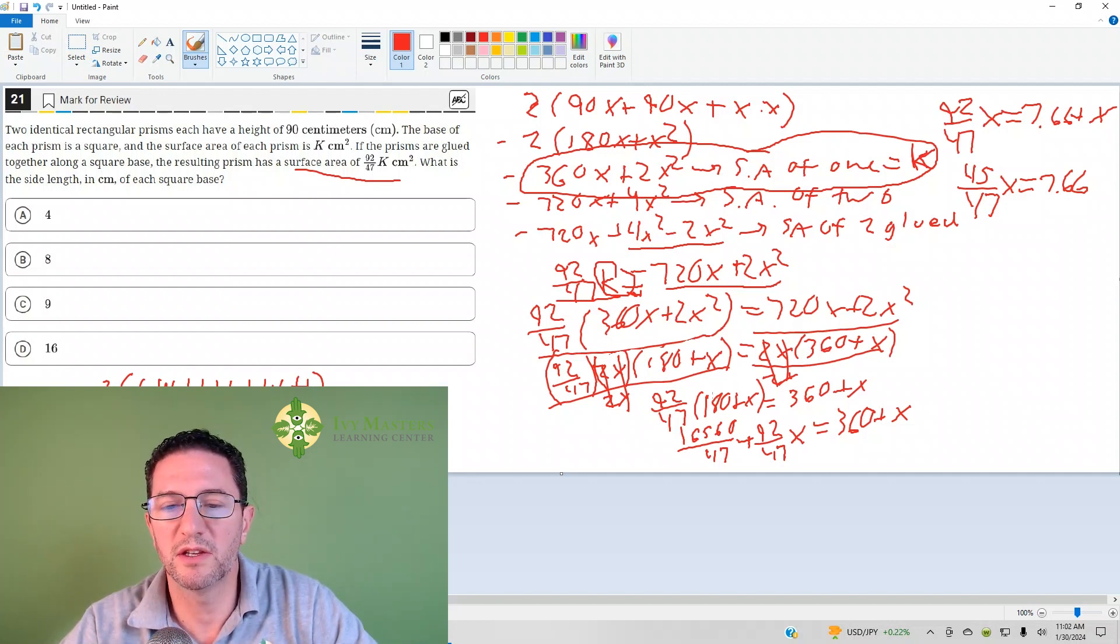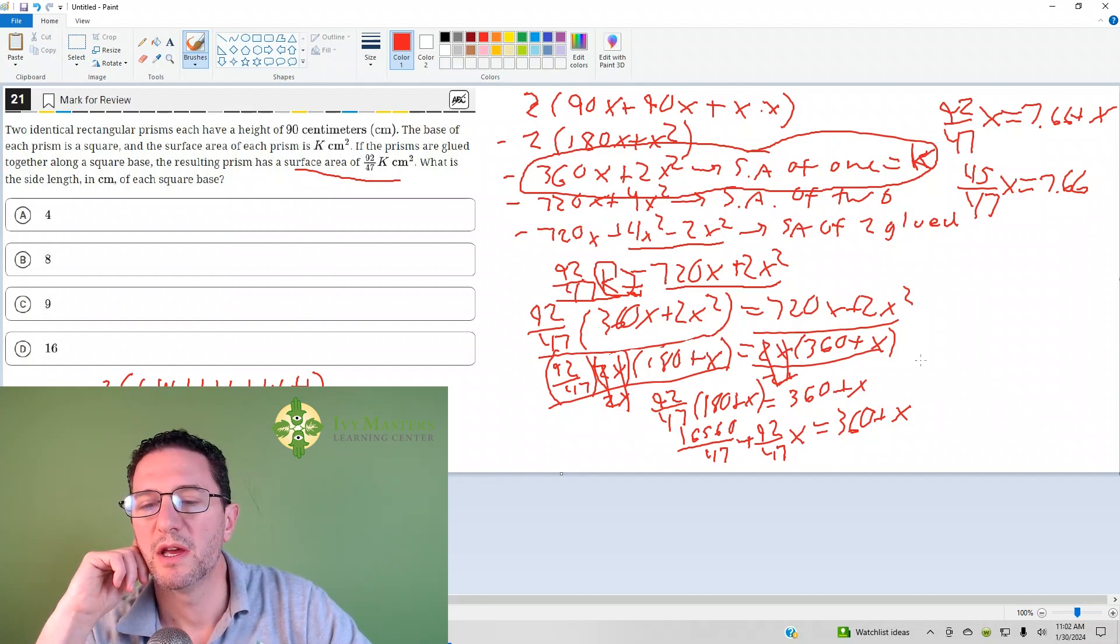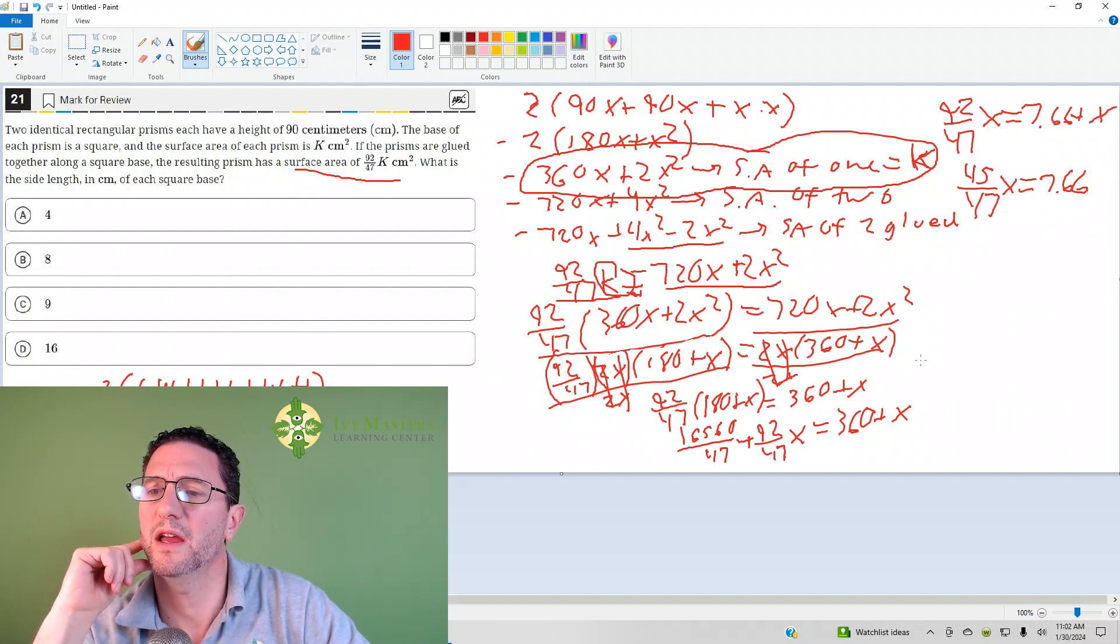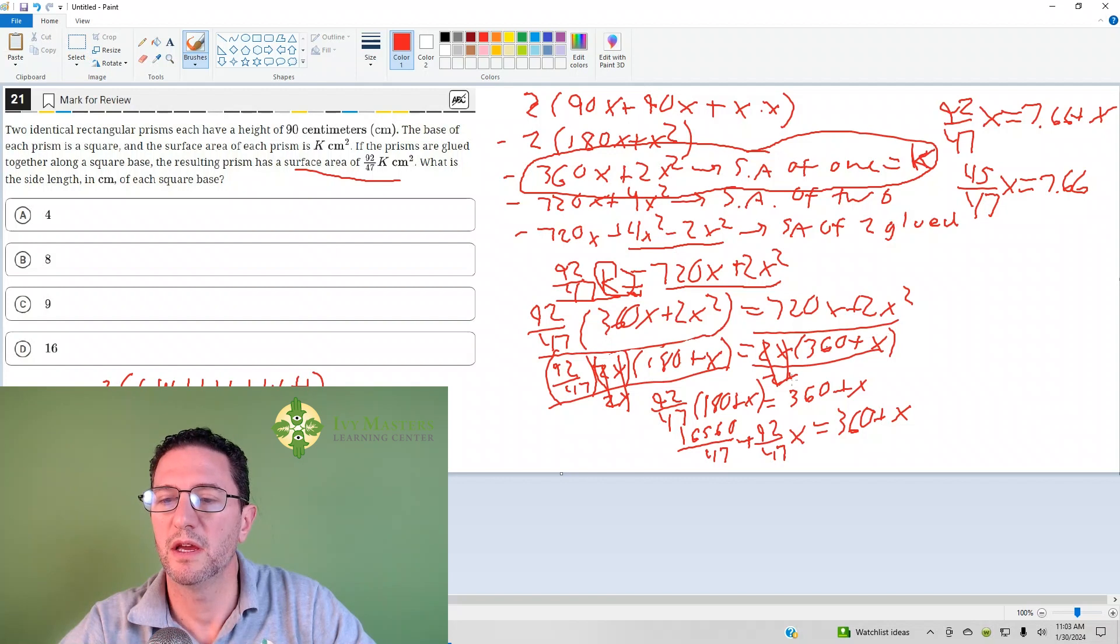And so now what do you do? You can distribute and you get this crazy fraction here. And then it equals 360 plus x. So one important thing here is look at your answer choices. They're all whole numbers. It's very easy for you to lose confidence when you're like right at the end of the problem, like I actually did yesterday and say, maybe there's a, maybe I did something wrong. But stay the course.